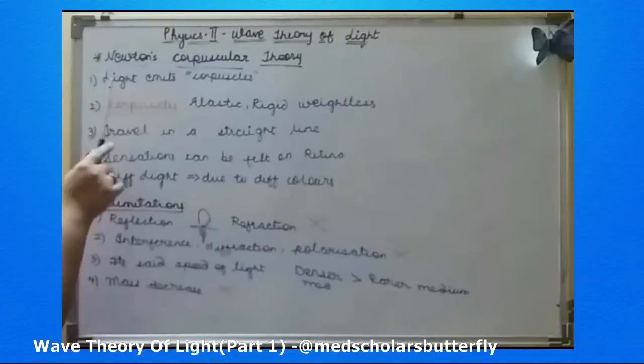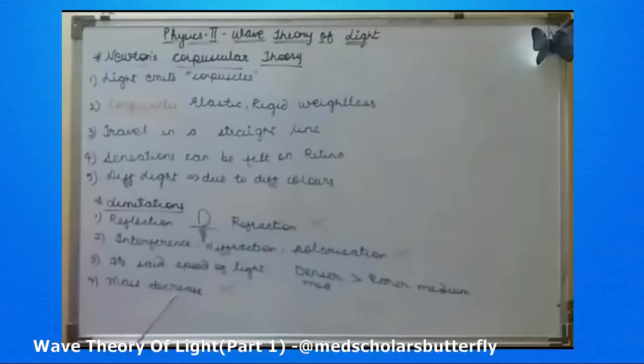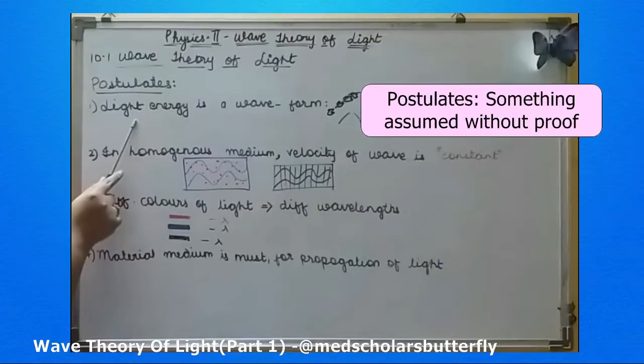Also, since light emits corpuscles, every time there is emission of light, the mass of the object which emits the light — for example, a bulb — it must decrease, but it doesn't decrease. So he failed to explain these terms. These are the limitations of Newton's corpuscular theory.